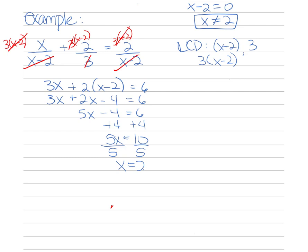We found that x equals 2 mathematically. However, our restriction said all numbers are valid except x equals 2. Because our mathematical solution is x equals 2, that is a bad solution for this problem — mathematically it is correct, but for this context it is not valid. So there is actually no solution; the solution does not exist.